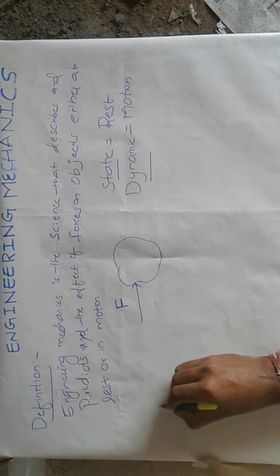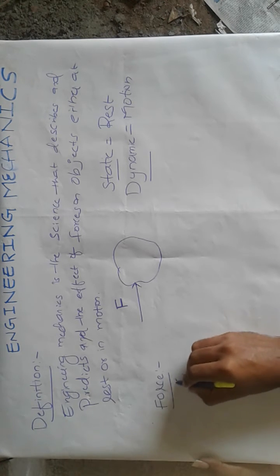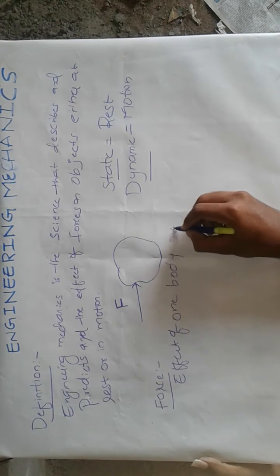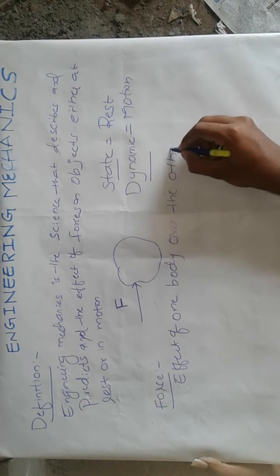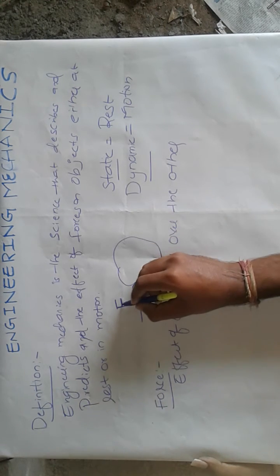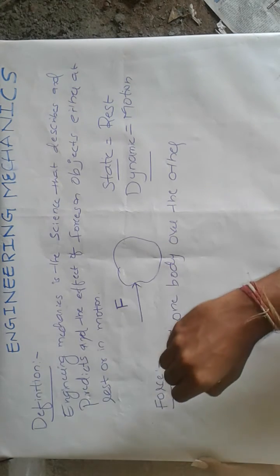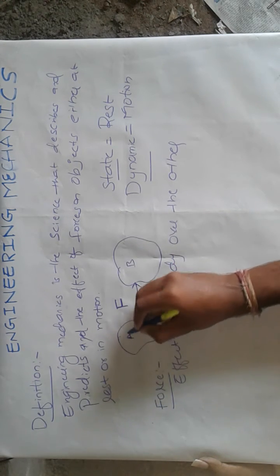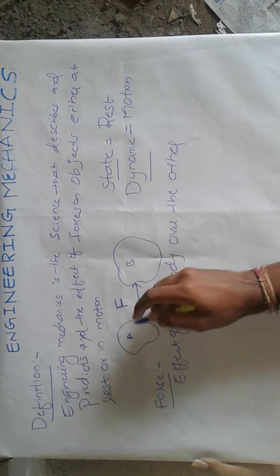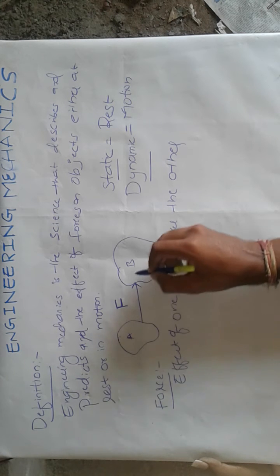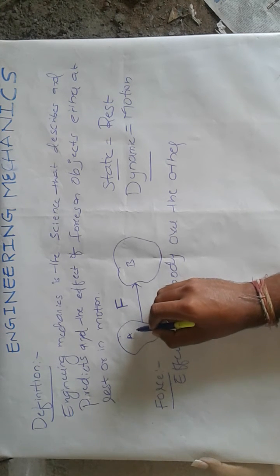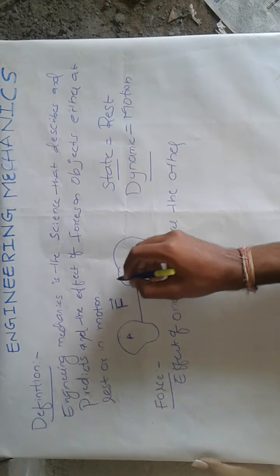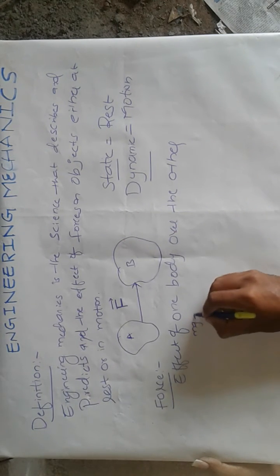Force is nothing but the effect of one body over the other. This force is applied on a body by some other body. Consider body A and body B — whenever these two bodies strike each other, the force is transferred from body A to body B. That effect of one body transferred to the other is said to be force. Force is a vector quantity, which has both magnitude and direction.